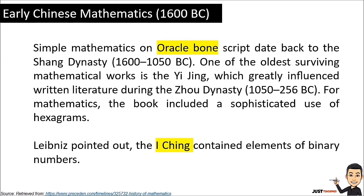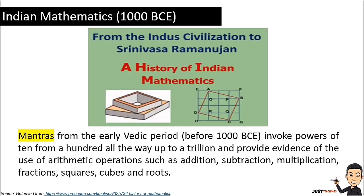What is a hexagram? A hexagram is a six-pointed geometric star figure. Leibniz pointed out that the Yijing, which is a Book of Changes or Classic of Changes, contained elements of binary numbers. Now we have Indian mathematics.